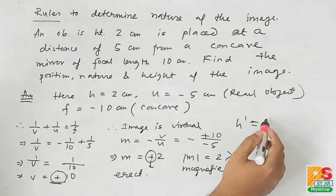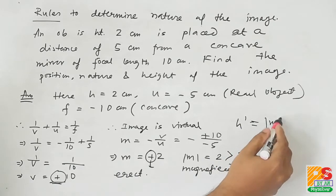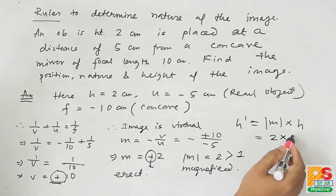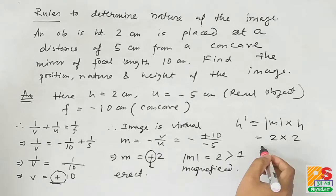Now height of the image is nothing but mod m into height of the object. Mod m is 2 and height of the object is given as 2 cm. So height of the image formed will be 4 cm.